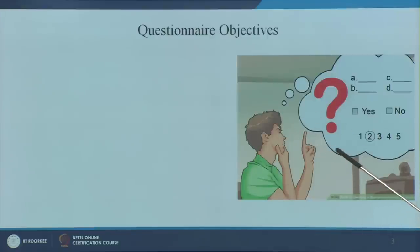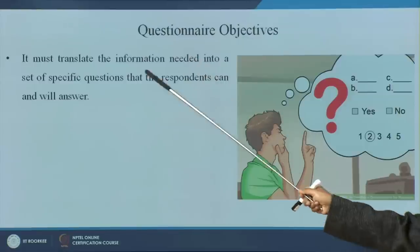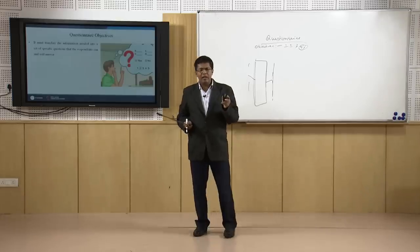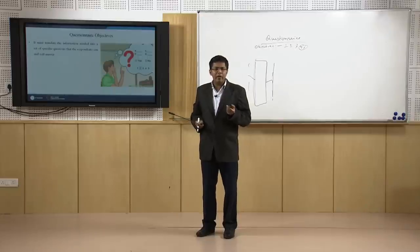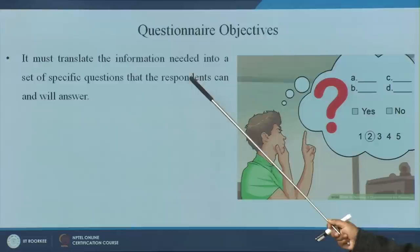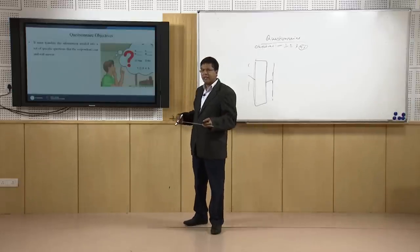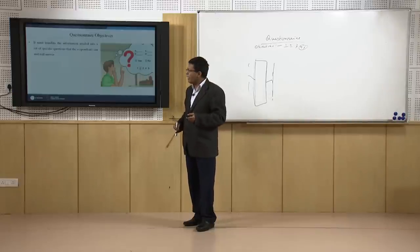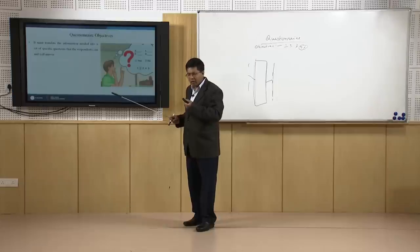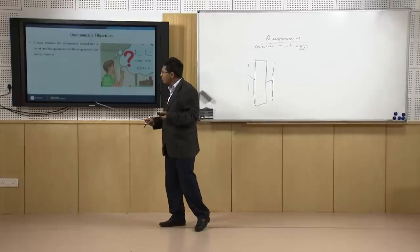According to your objectives, the questionnaire must translate the information needed into a set of specific questions that respondents can and will answer — two things. First, they should be able to answer: if you ask me about biotechnology or space research, I might not be able to answer. Second, willingness: if you ask me very sensitive personal information, I may not answer. So you have to use your logic to figure out how to ask the question so the respondent is ready to divulge the information.